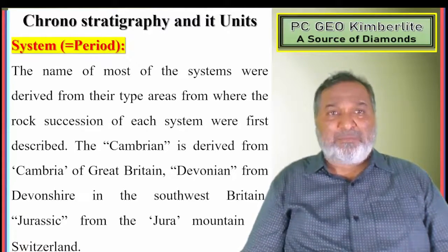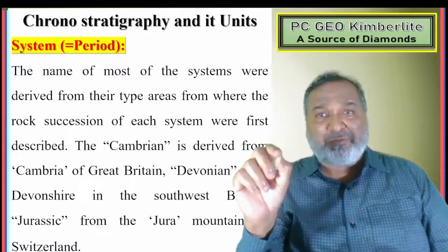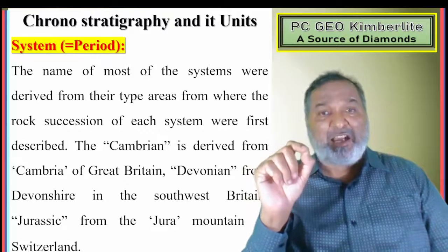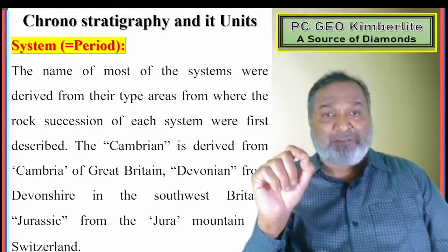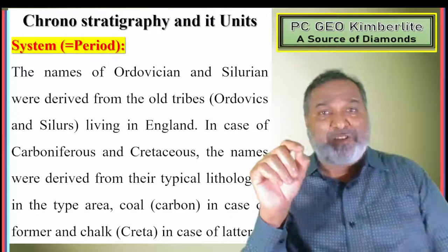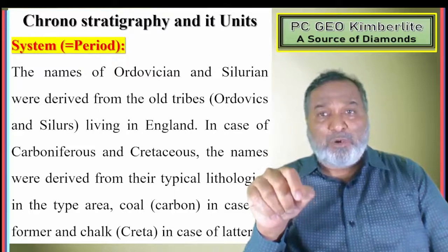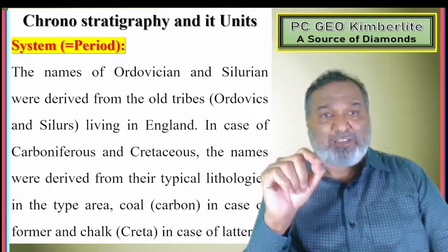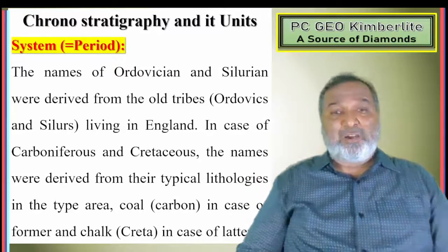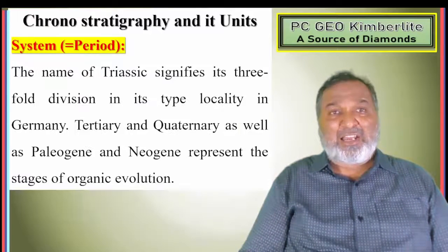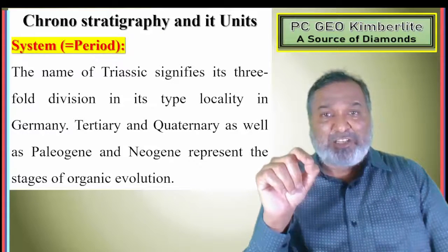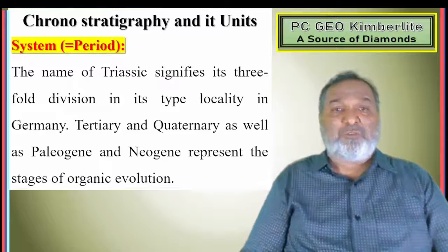Most system names were derived from their type areas where rock successions were first described. For example, Cambrian from Cambria in Great Britain; Devonian from Devonshire in southwest Britain; Jurassic from the Jura Mountains of Switzerland; Ordovician and Silurian from old tribes Ordovices and Silures of England. Carboniferous and Cretaceous were derived from typical lithologies — coal (carbon) and chalk (creta). Triassic signifies its three-fold division in Germany. Tertiary, Quaternary, Paleogene, and Neogene represent stages of organic evolution.